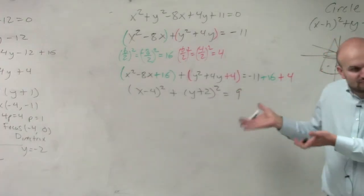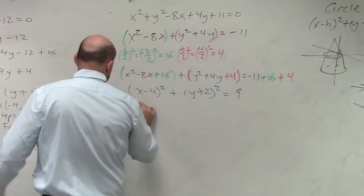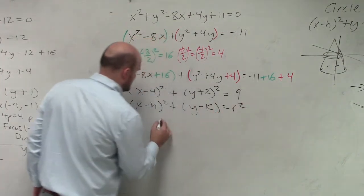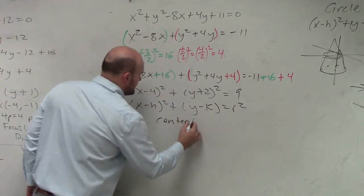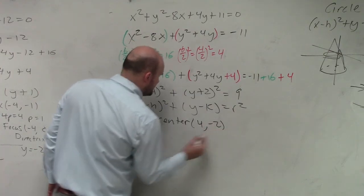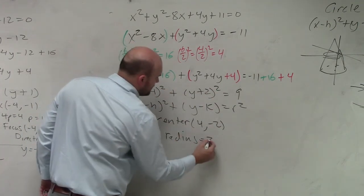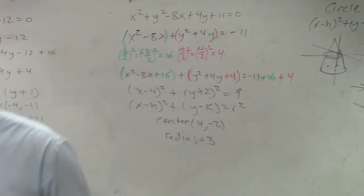And now, guys, is this in the general form of a circle that we like? Yeah. So we can say the center is 4 comma negative 2. The radius is r squared, which is 3.